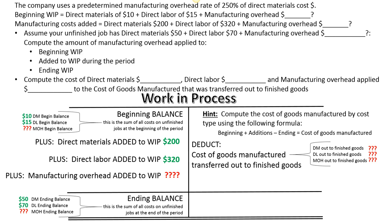Assuming you've stopped the video and worked this out on paper, what you'll see in green is all the known information from above. I then have to solve for how much overhead was applied on the beginning balance. I take my $10 of direct materials beginning balance, multiply by the predetermined overhead rate of 250%, and I get a manufacturing overhead beginning balance of $25. Do the same thing for manufacturing costs added: I added $200 in direct materials and $320 in direct labor, so overhead applied during this period is $200 times 250%, which equals $500.